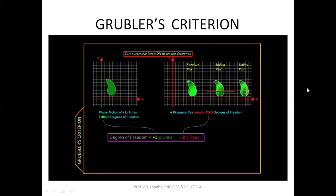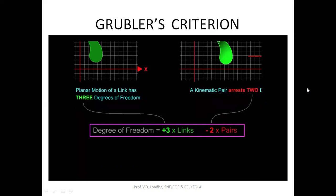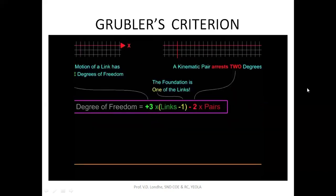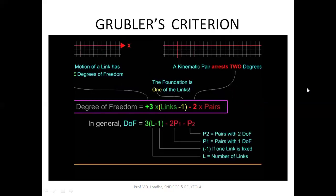We can combine these conclusions into a single formula for degrees of freedom of a mechanism. Since each link adds three degrees of freedom, we multiply the total number of links by three. Since each pair removes two degrees of freedom, we multiply total pairs by minus two. Since one link is fixed to the ground, we subtract one from total links. Generalizing to include pairs with two degrees of freedom, the formula becomes: F = 3(n − 1) − 2p1 − p2. This is called Grubler's criteria.